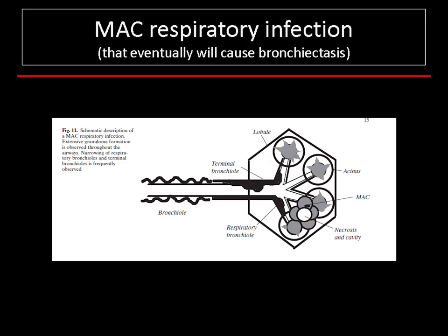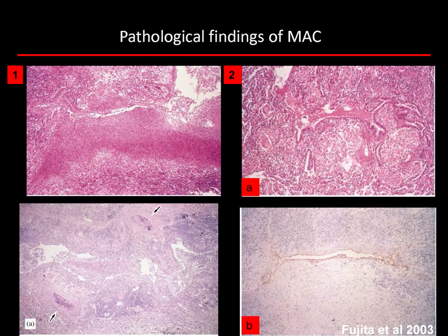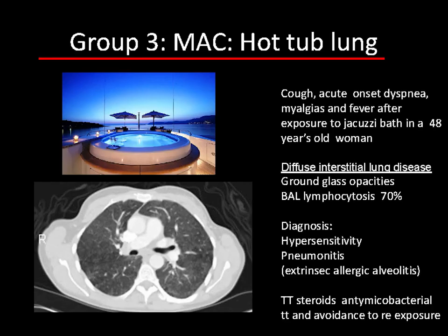Regarding how mycobacteria affect the lung: there is important progression of granuloma formation inside the terminal bronchiole, producing massive destruction of bronchial architecture, necrosis, and cavity formation. The bronchi lose cartilage and their structural layers, leading to bronchiectasis formation. Whether bronchiectasis comes before or after infection — the chicken-or-egg question — MAC certainly causes very significant damage to our patients' lungs.